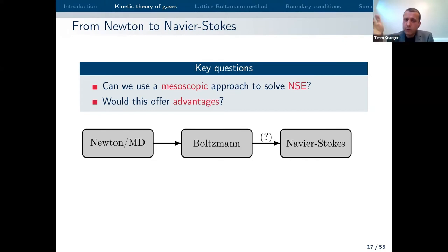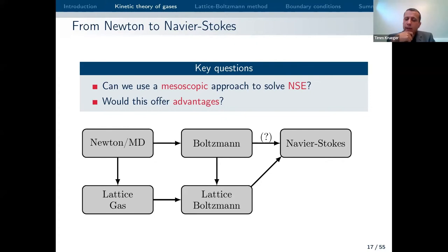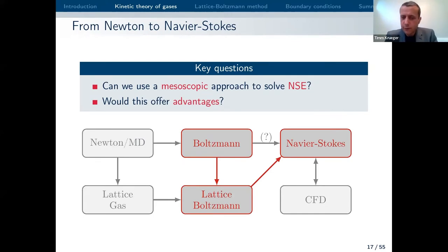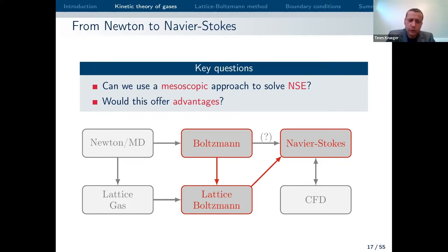You can show — there were some mathematical issues for some time, hence the question mark — that the Boltzmann transport equation leads to the Navier-Stokes equation if you coarse-grain further. Now the question is: if we discretize the Boltzmann equation, can we use the resulting algorithm to actually solve the Navier-Stokes equation? That is my aim for this seminar: if we start with the Boltzmann equation and discretize it, can that also be seen as a solver for the Navier-Stokes equation? I don't talk about lattice gas automata and MD in detail today.